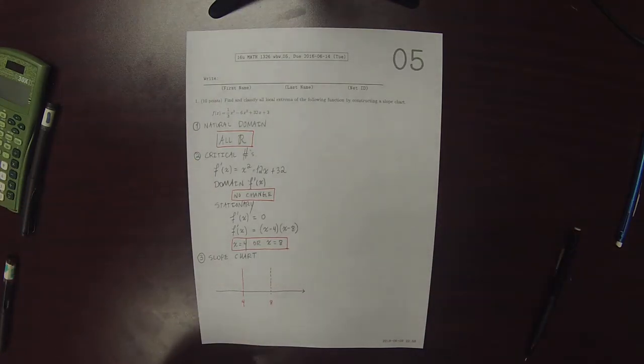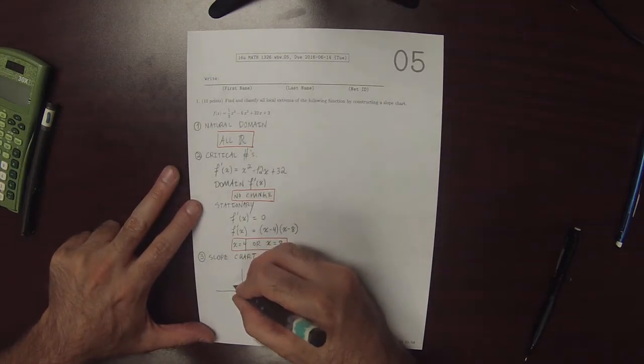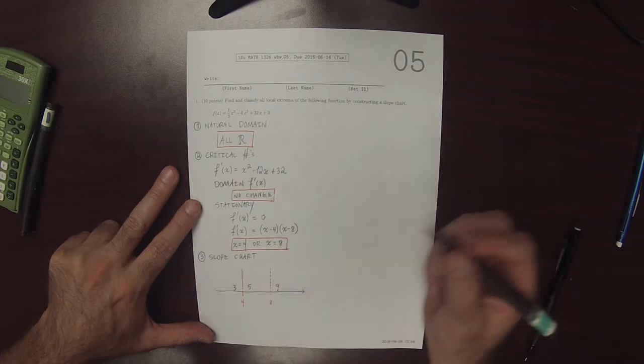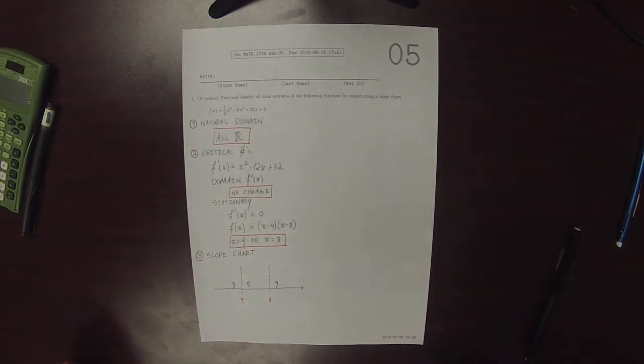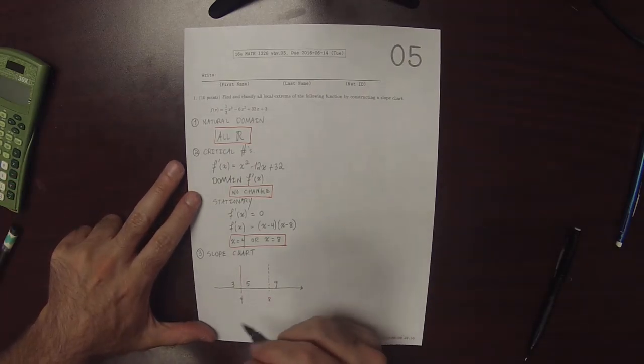So now we need to select points in each region. So how about 3, 5, and 9. And now we need to evaluate the derivative at each test point.